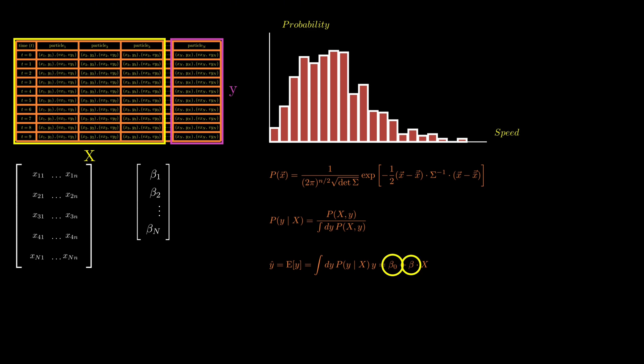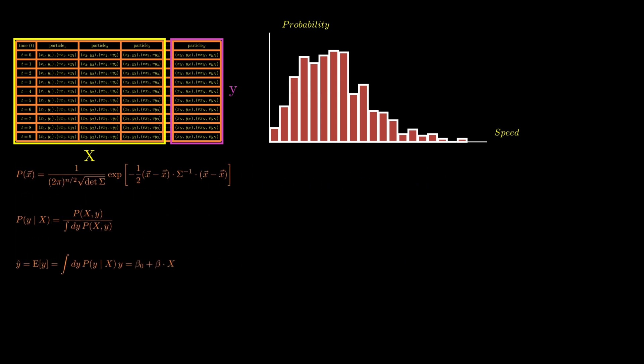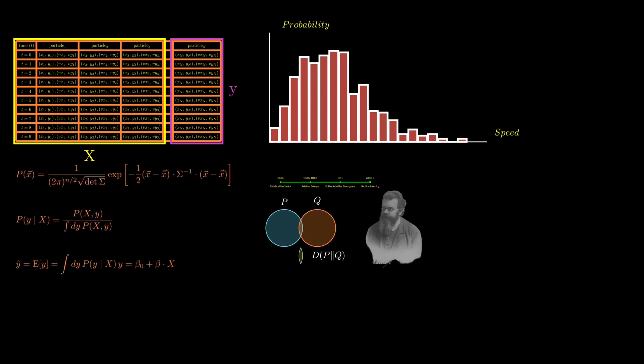Interestingly, the beta parameters here can be derived from the mean and covariance matrix of the Gaussian distribution, though those themselves still need to be estimated. In episode 2, we introduced relative entropy, a concept developed by Ludwig Boltzmann in statistical physics, to estimate these unknowns.